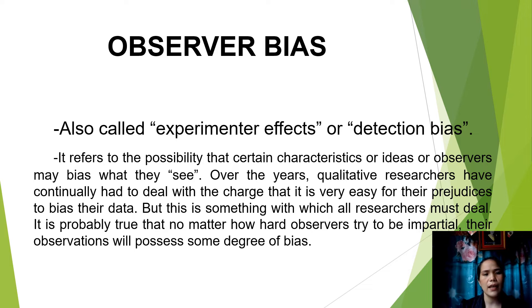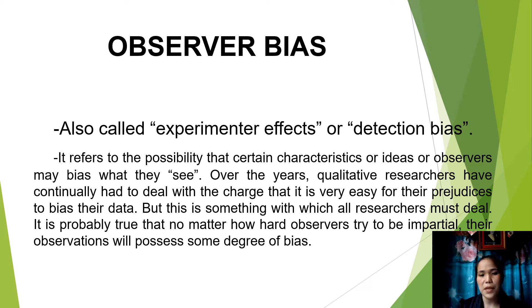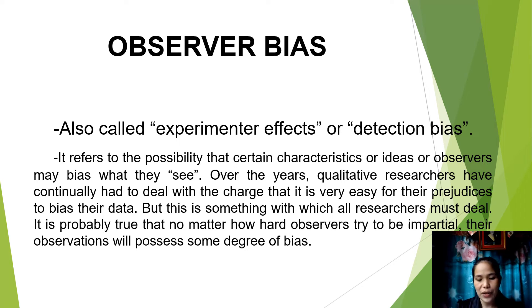Observer bias, also called experimental effects or detection bias, refers to the possibility that certain characteristics or ideas of observers may bias what they see. Qualitative researchers have continually had to deal with the charge that it is very easy for their prejudices to bias their data. It is probably true that no matter how hard observers try to be impartial, their observations will possess some degree of bias. No one can be totally objective, as we all are influenced to some degree by our past experiences. Nevertheless, all researchers should do their best to become aware of and try to control their biases.